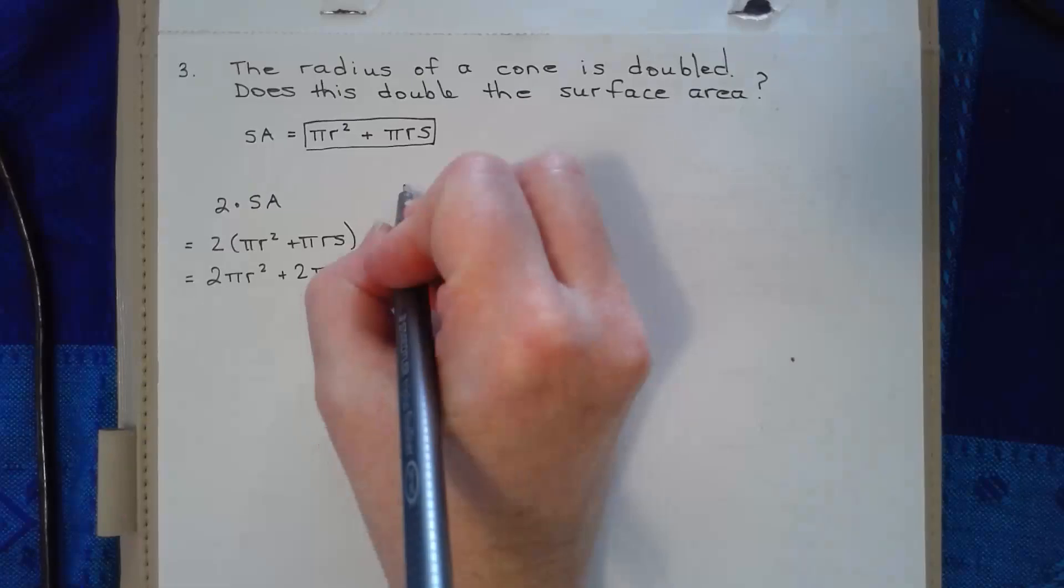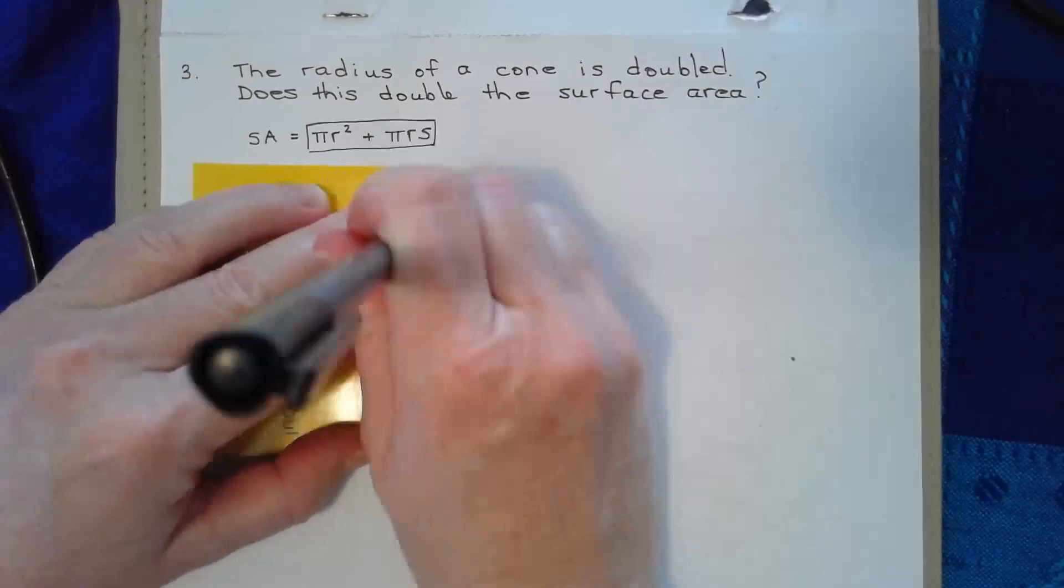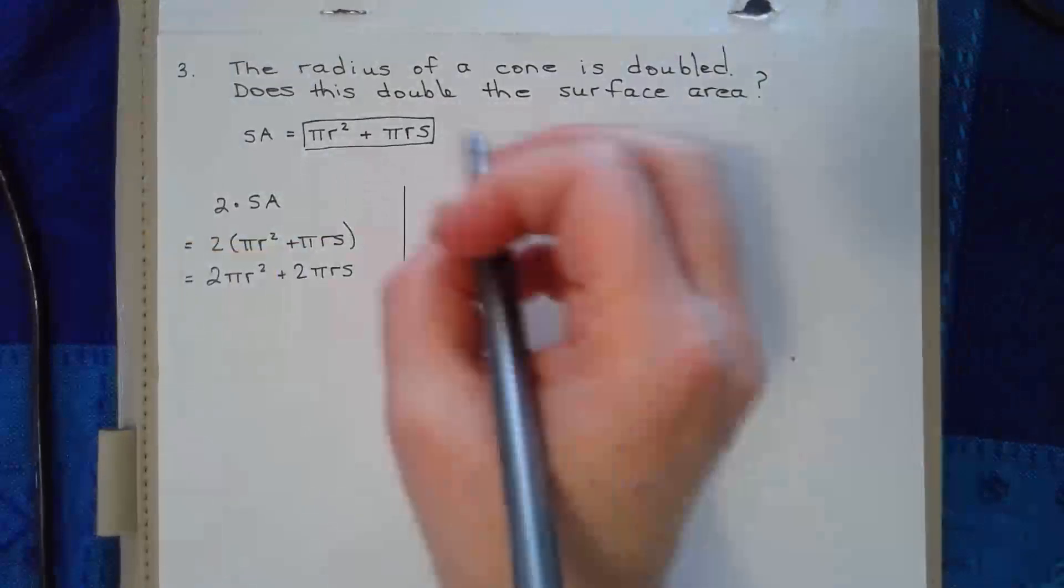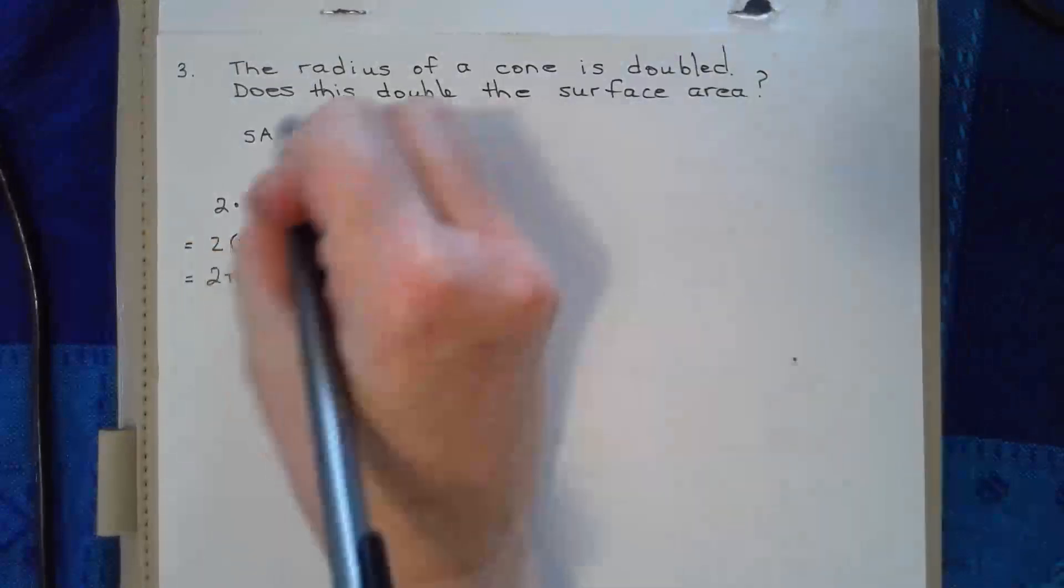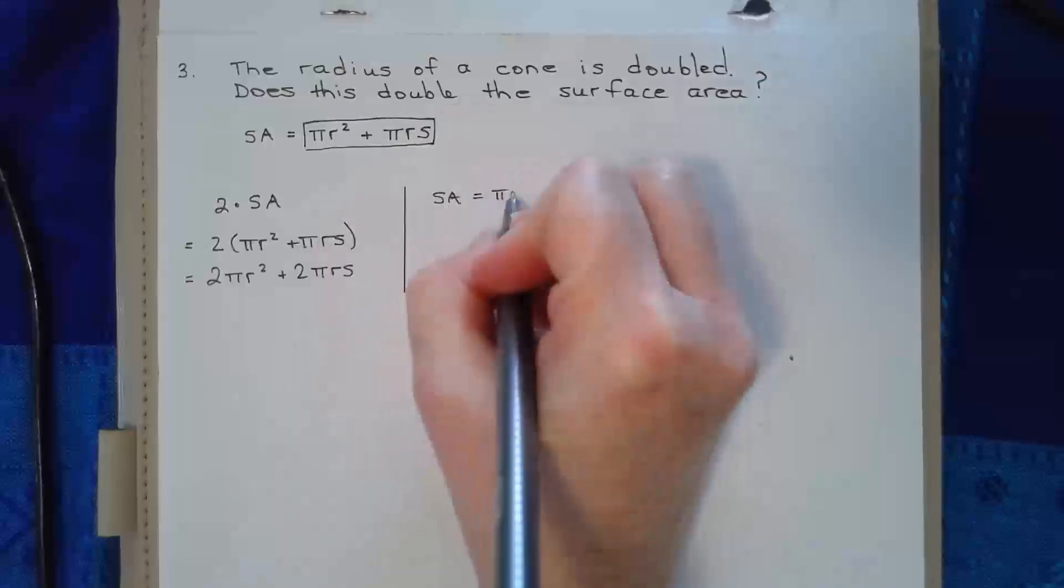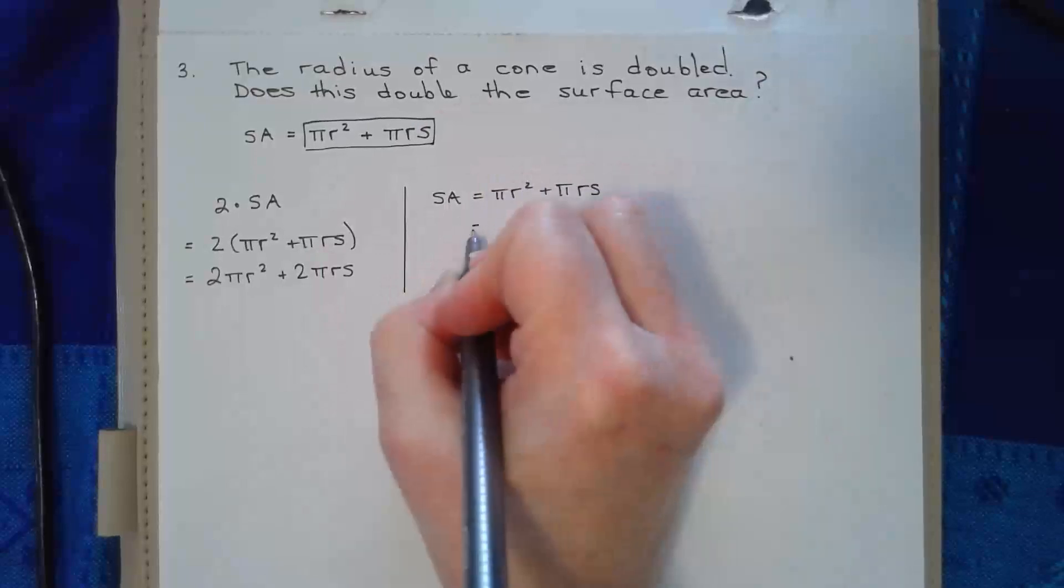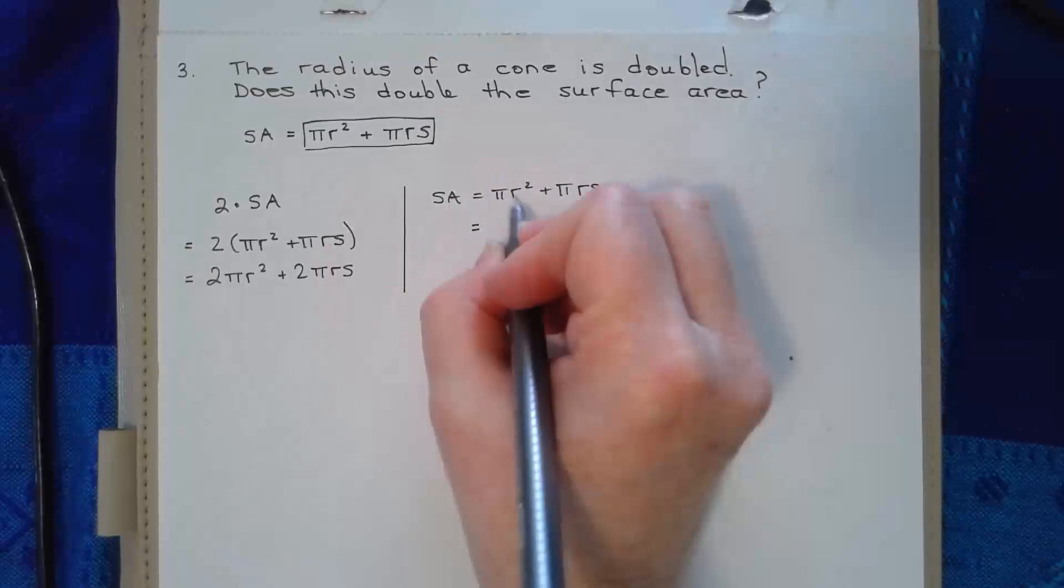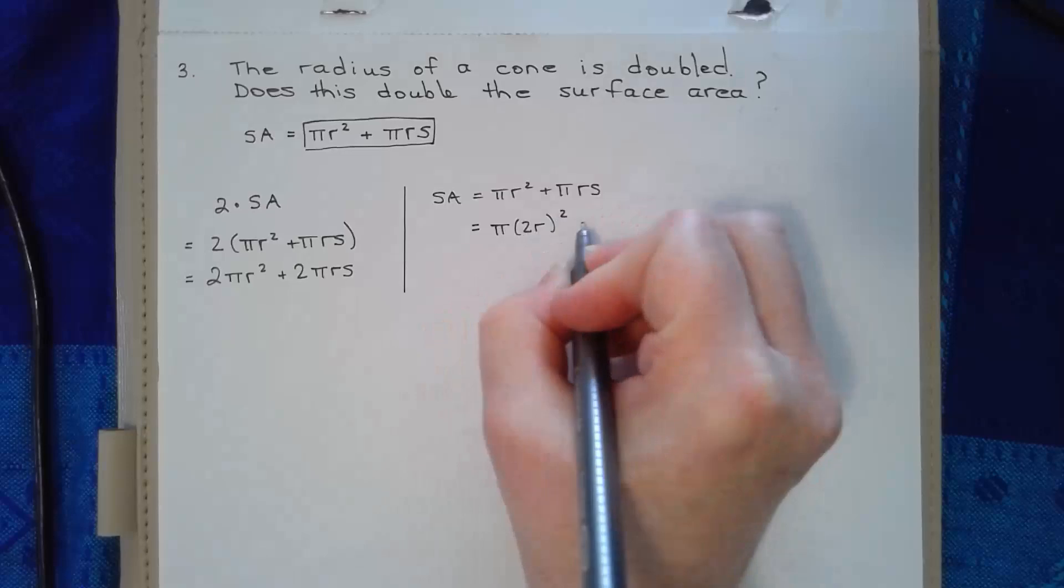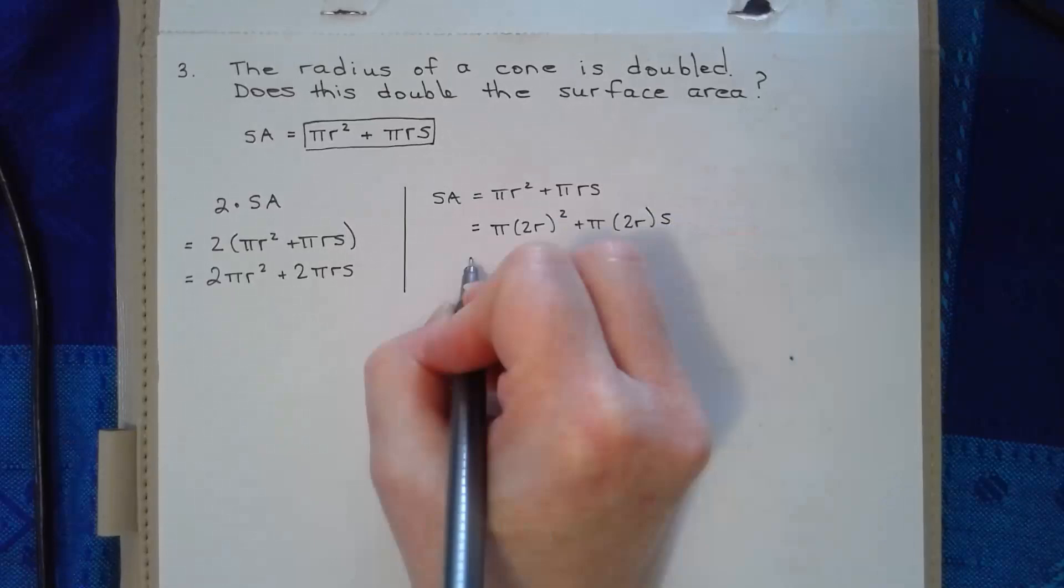So then what I want to do is I want to say, let's see what my surface area looks like when I double the radius. So I know that my surface area is equal to pi r squared plus pi r s. And if I double the radius, then r is just going to be two r. So I'm going to have pi times two r squared plus pi times two r s. And I'm going to go ahead and simplify that.